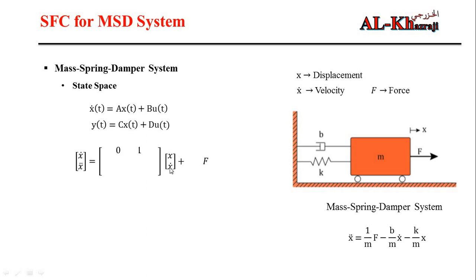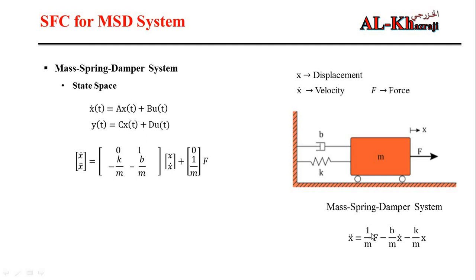The relationship between x-dot and x-dot is itself, so we put one — that is the first row of the A matrix. For the second row: the relationship between x-double-dot and x is minus k/m, and the relationship between x-double-dot and x-dot is minus b/m. For the B vector, x-dot has no direct input term, so zero, and from the differential equation x-double-dot has 1/m.